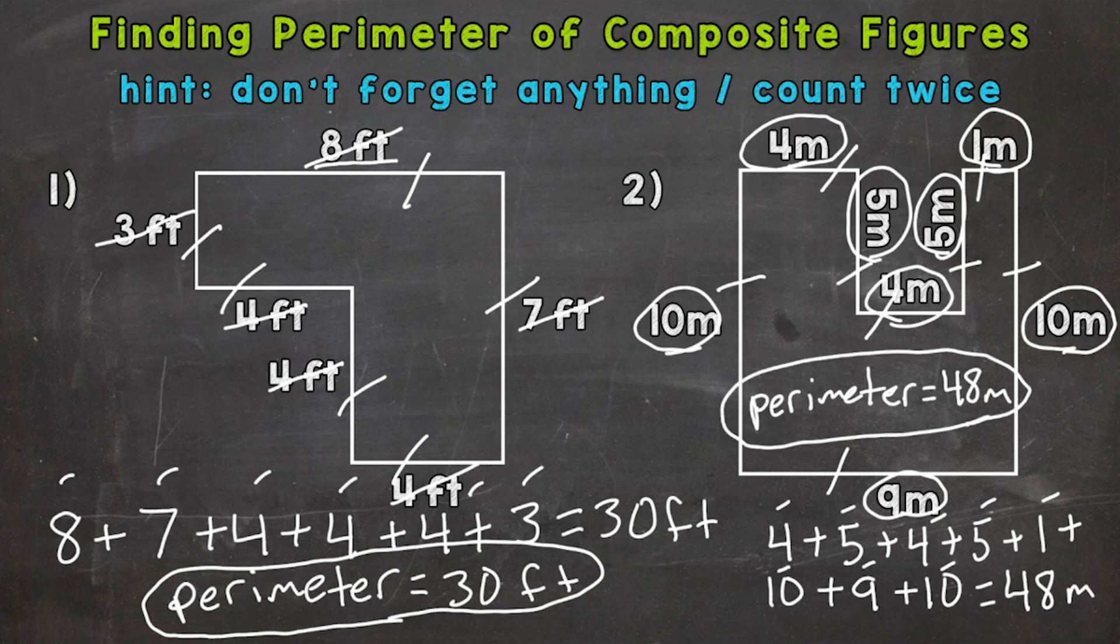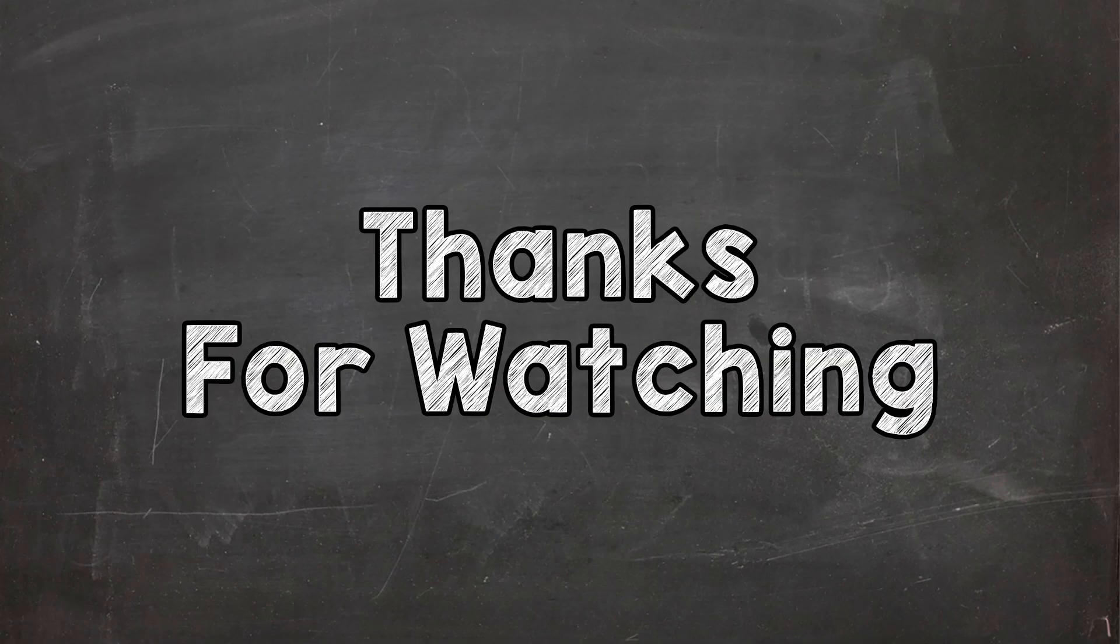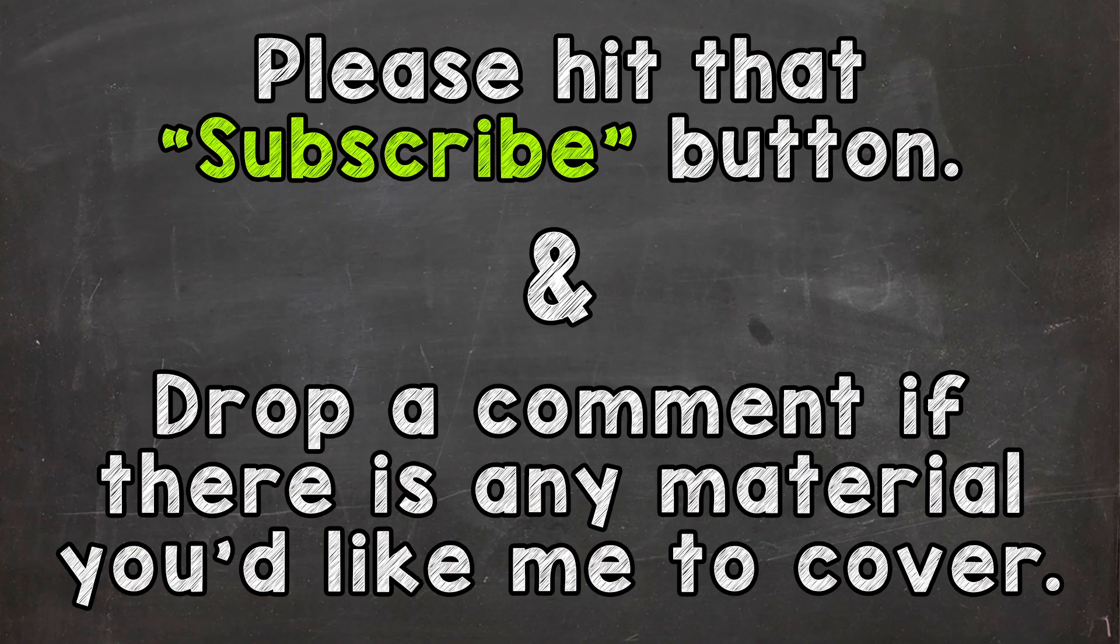There you have it. That's how you find the perimeter of a composite figure. Just make sure you don't forget anything or count anything twice. Stay organized, add all your sides up, and you'll be good to go. I hope that helped. Thanks for watching. Until next time, peace.